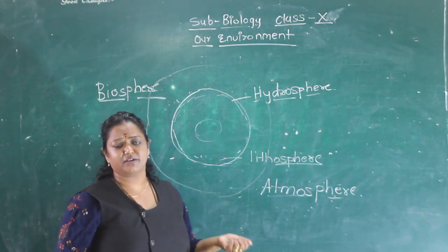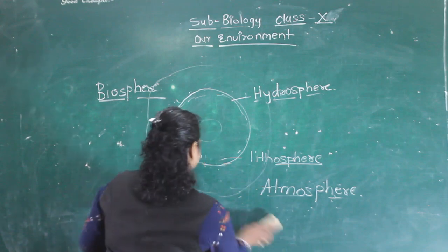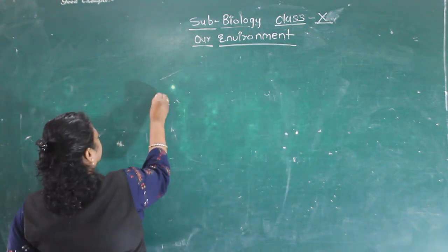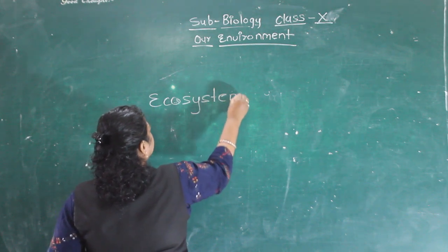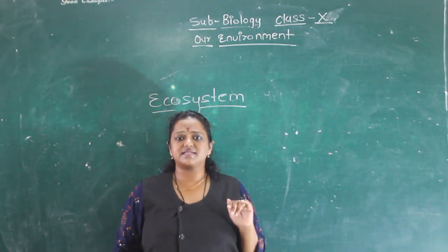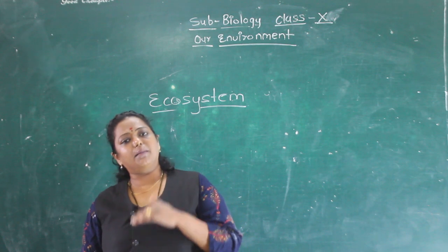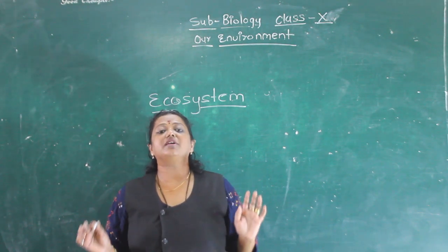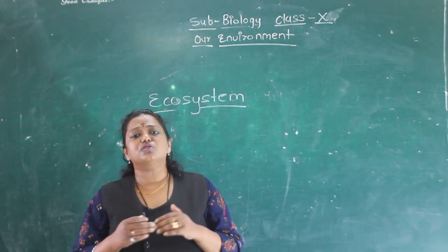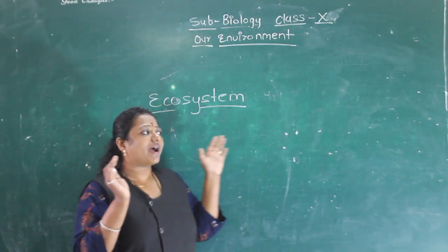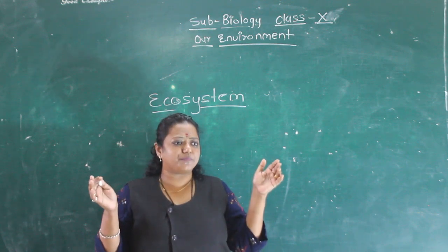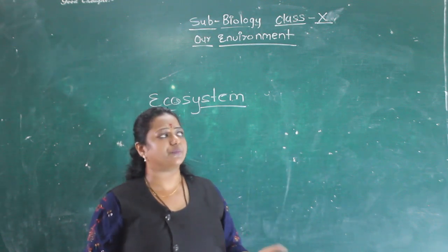So in our environment, what are the factors of the environment? What is exactly the ecosystem? Ecosystem is a system in which biotic factors and abiotic components of the environment are living in harmony. Their interdependence leads to a harmonious life.